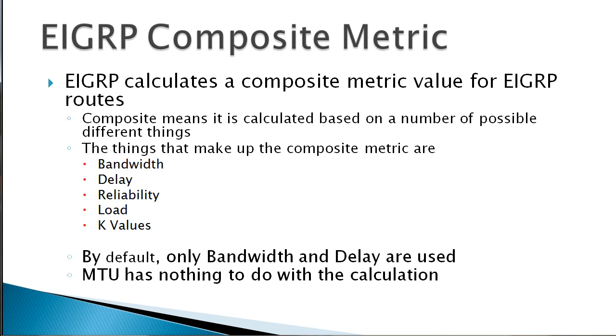When we're dealing with EIGRP, we have something called the composite metric. The composite piece of it just means that EIGRP uses a whole bunch of different things to go ahead and calculate the metric. So it's created from a list of different things.